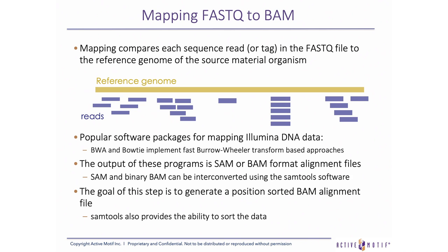The next stage of our bioinformatics pipeline is to map the FASTQ data. Each sequence read, also called a tag for ChIP-seq data, is mapped to the reference genome of the organism from which the starting library was constructed. This produces an alignment file in SAM, or preferably the more compact BAM binary format. Popular software packages for mapping Illumina DNA data are BWA and Bowtie, both of which are based on the Burrows-Wheeler transform. The SAM tools software is useful for SAM to BAM format conversion and sorting the BAM file by the mapping position of each tag, producing a position-sorted BAM alignment file.